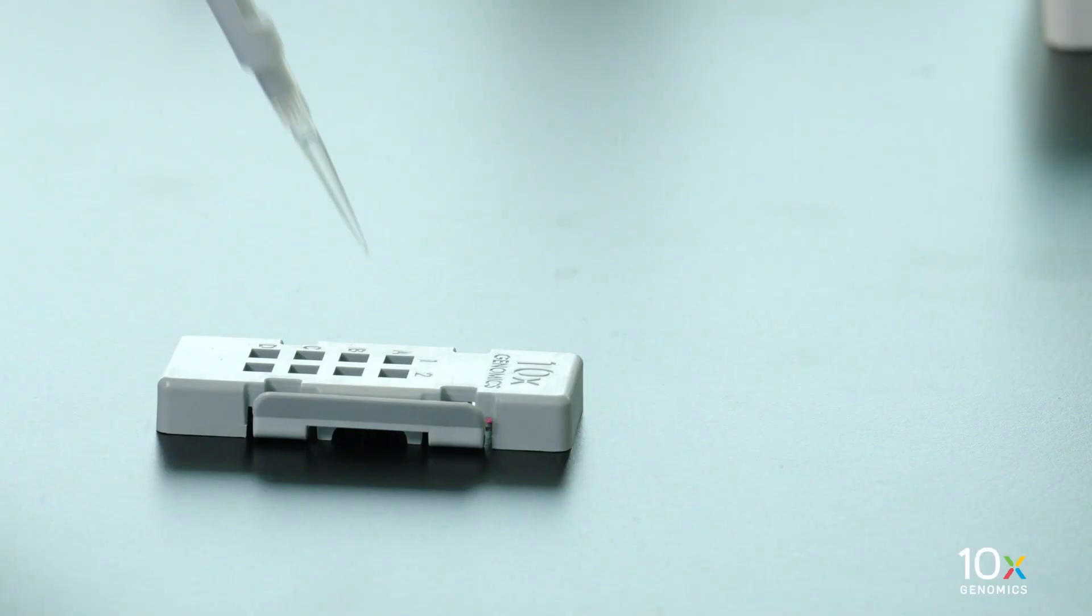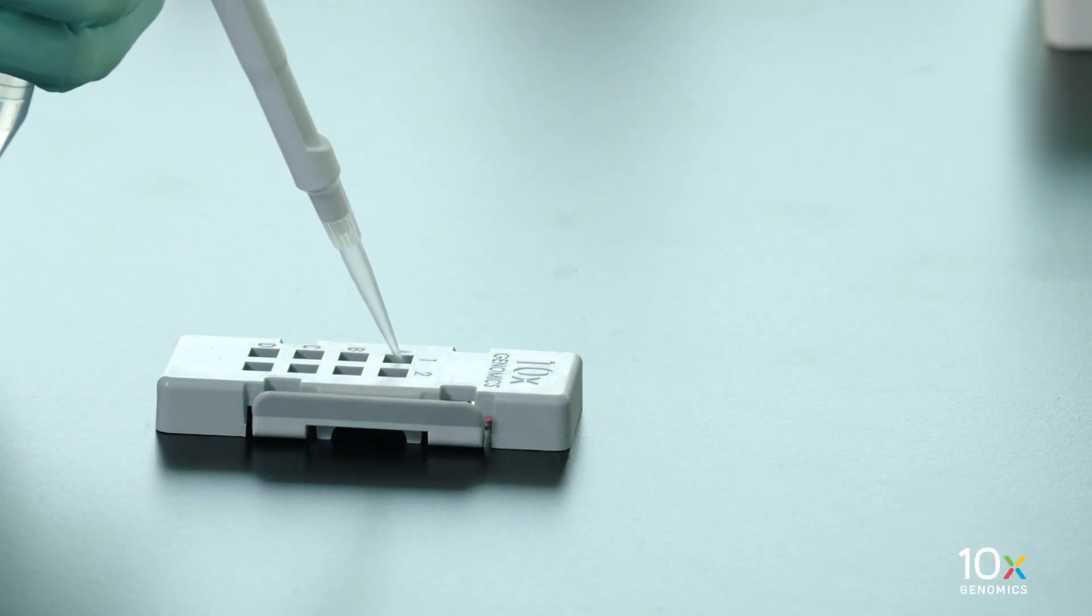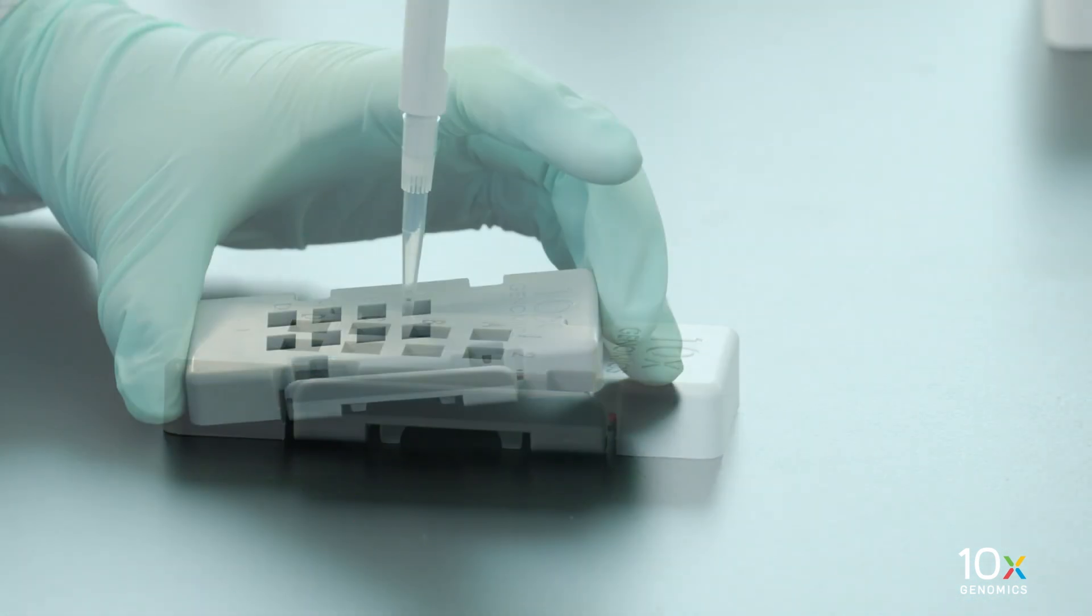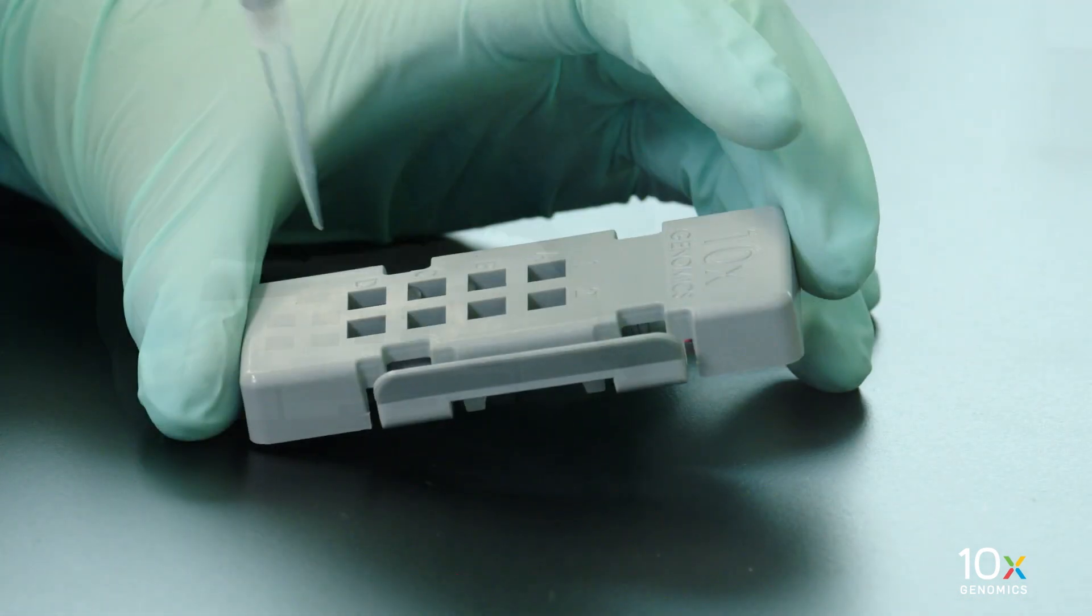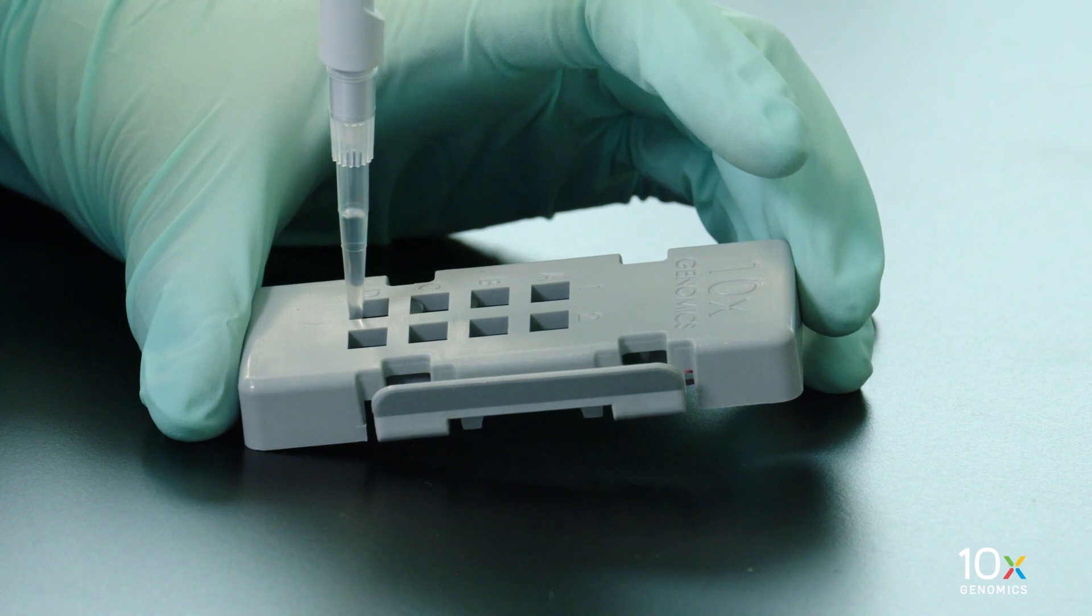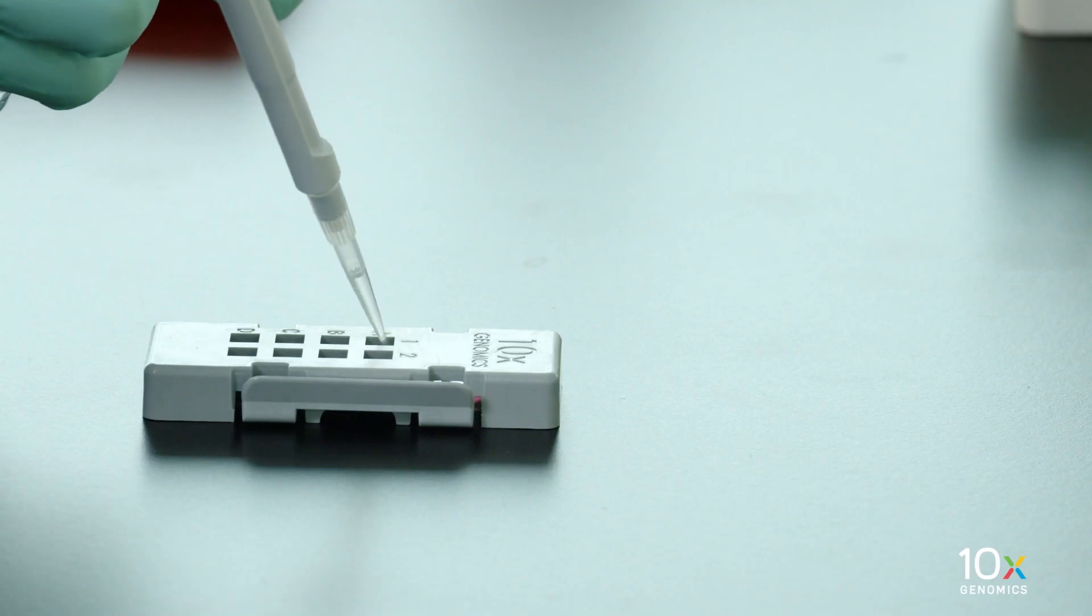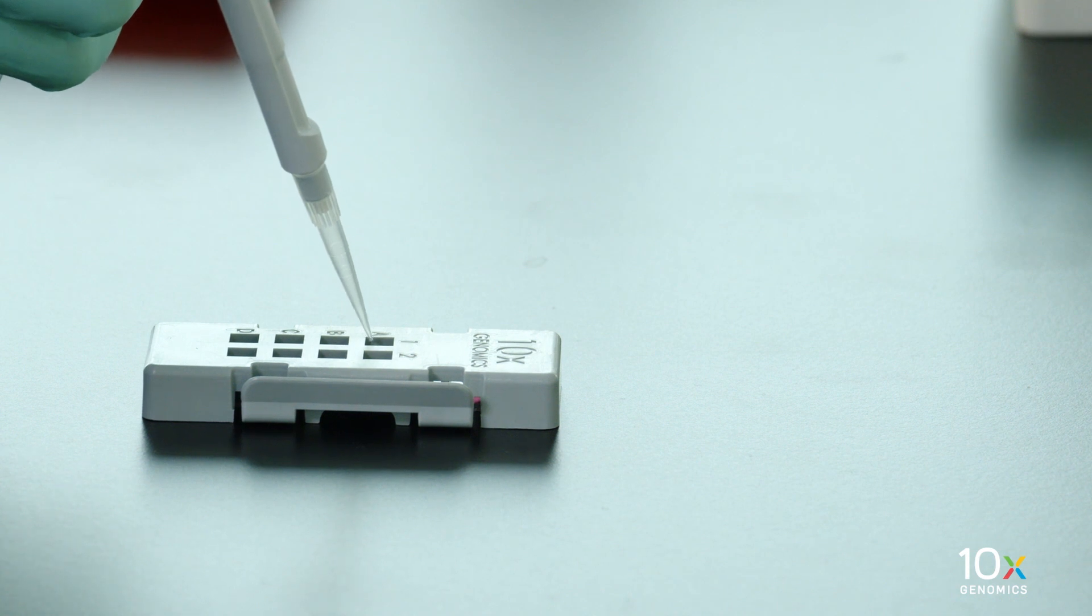Add 150 microliters of TE buffer along the side of the wells. Remove all of the TE buffer from the wells. Add 100 microliters of TE buffer pH 9.0 along the side of the wells.